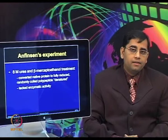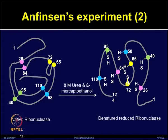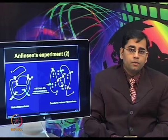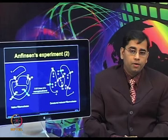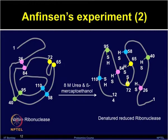The denatured polypeptide lacked enzymatic activity. The ribonuclease protein contains 124 amino acid residues and forms 4 disulfide linkages, between cysteines at positions 26 and 84, 40 and 95, 58 and 110, and 65 and 72. The ribonuclease native conformation is lost when it was treated with 8 molar urea and beta-mercaptoethanol, forming a denatured reduced ribonuclease due to the breaking of disulfide and non-covalent interactions.